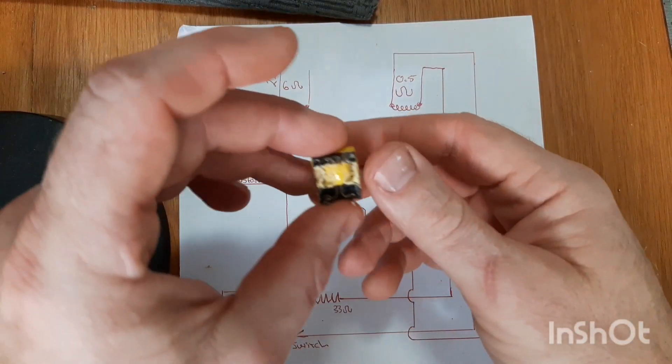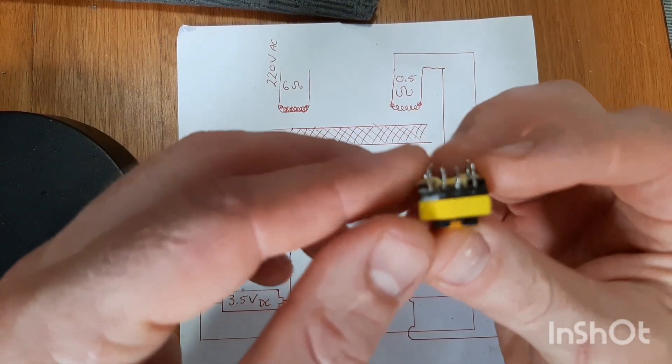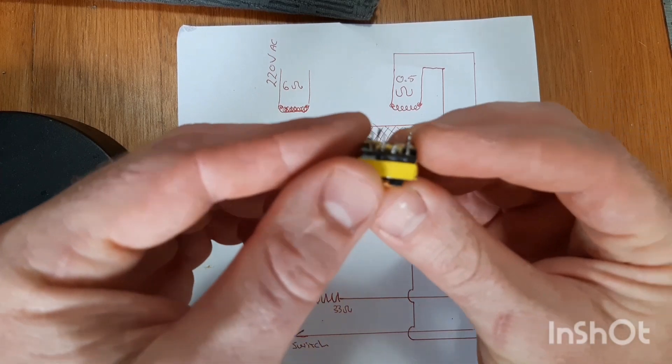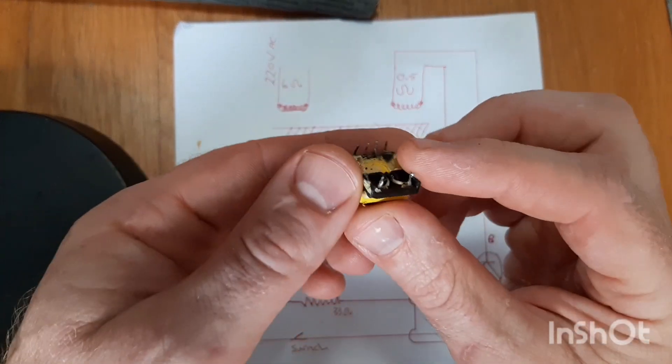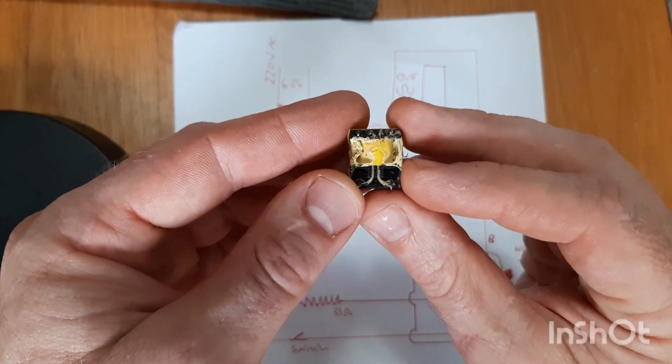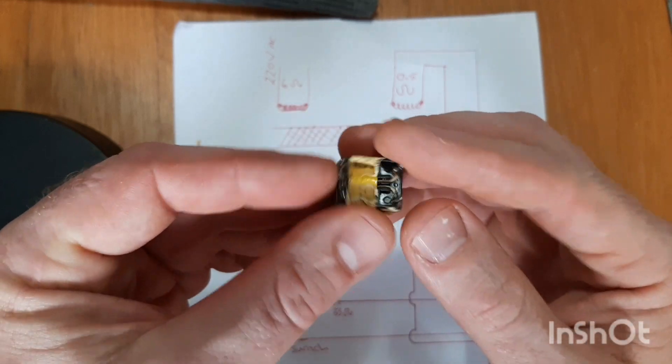Once you've got your transformer out, it'll look like this. There will have four pins, as you can see, the four pins and two pins at the back, which I call the back. Front or back, whatever.